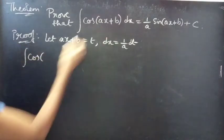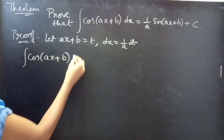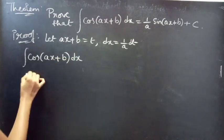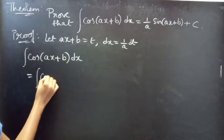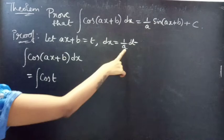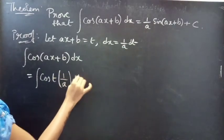Integral, let's consider LHS part. Integral cos(ax+b) into dx. Now, put ax plus b equals to t. We'll get integral cos t. And replace dx by 1 by a into dt.